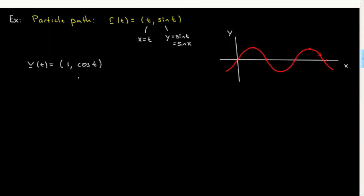And we want to plot those, but it's helpful to also have the speed — the magnitude of this. In this case it would be just the square root of one plus cosine squared t, i.e., (1 + cos²t)^(1/2).